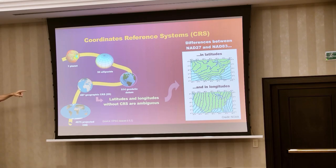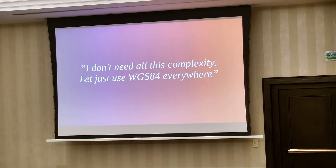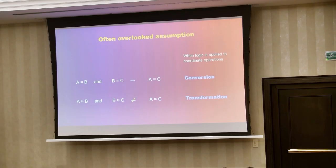On the right side there is, for example, the change in latitude and longitude between the North American system from 1927 and 1983. As we can see, for the same position the numbers change depending on which coordinate reference system is used — it can be quite significant, and the same thing applies in France and pretty much every country. Sometimes projects think 'we don't need all this complexity, let's just use WGS84,' which is the coordinate reference system used by GPS. But WGS84 is not always enough.